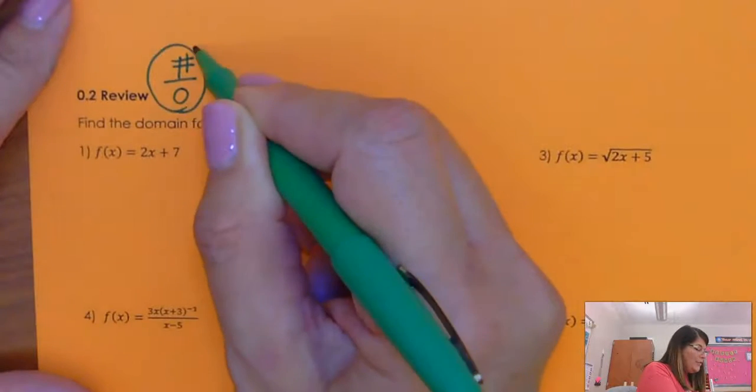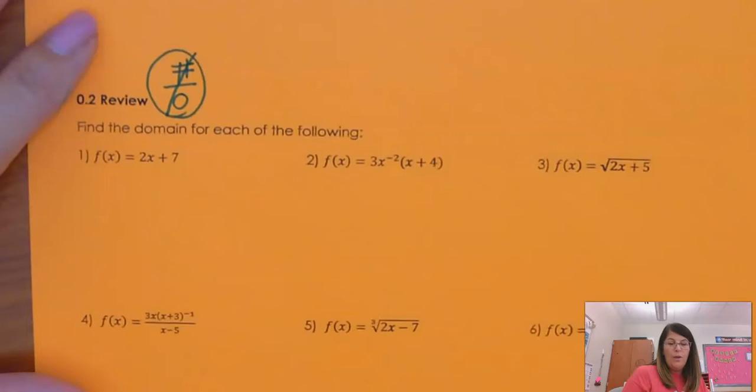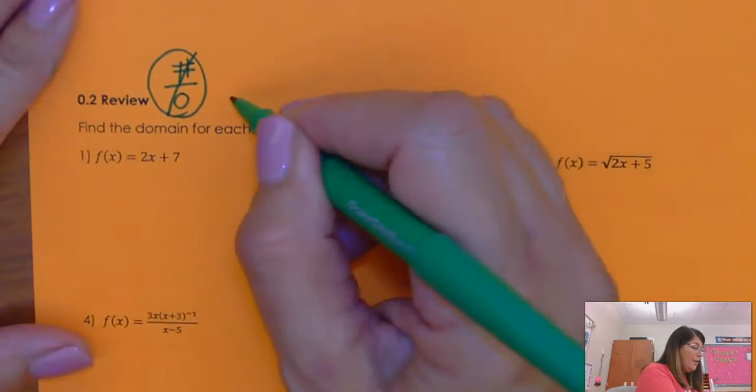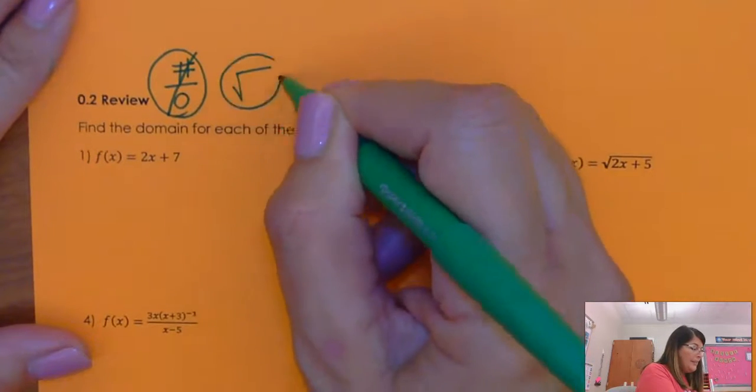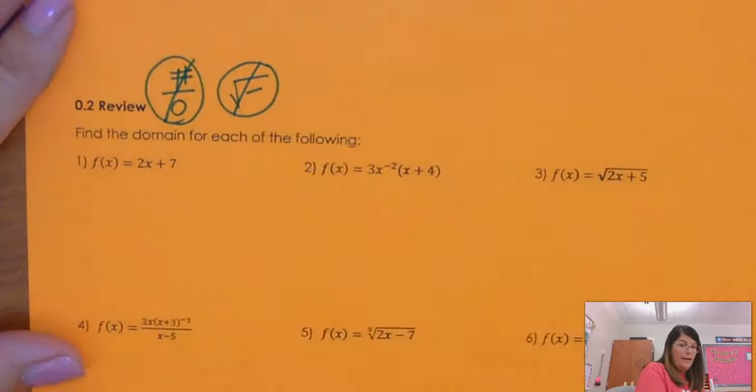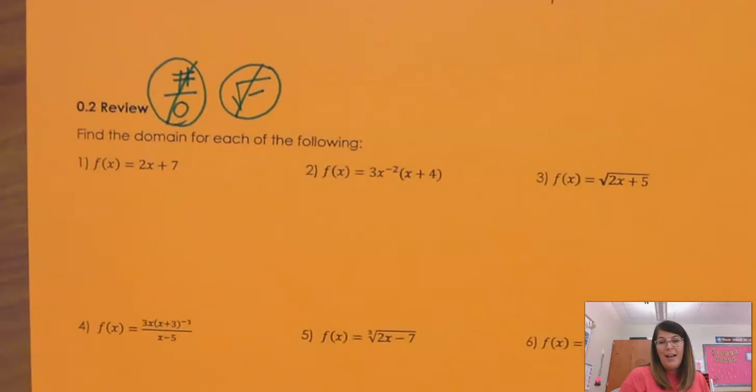Sin number one is you never want to divide by 0. So I always want to look and see, do I have a fraction? Not necessarily just a fraction, but a fraction that has an x in the denominator. And rule number two, sin number two that you never want to commit, is you never want to take a square root of a negative.